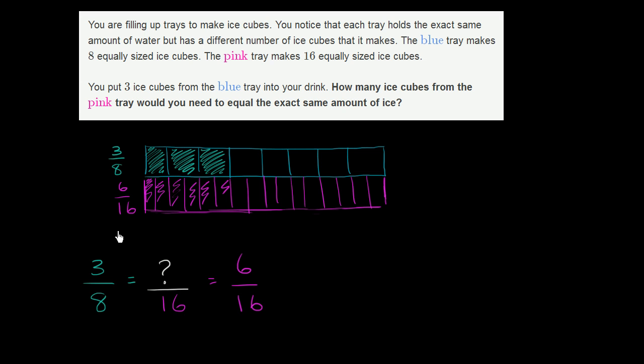Now does that make actual sense? Well, sure. To go from three over eight to six over sixteen, you multiply the numerator by two and you multiply the denominator by two. Now does that actually make sense?